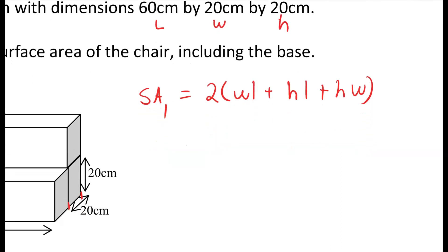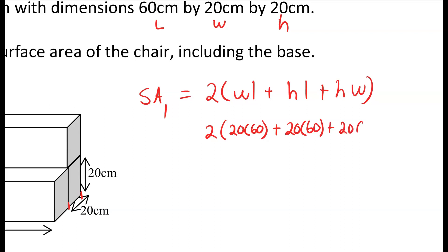The first thing we need to do is fill in the unknown values. Bringing the 2 down, we have our width, which is 20, multiplied by our height, which is 60, plus our height, which is 20, multiplied by our width, which is 20, plus our height, which is 20, multiplied by our width, which is 20.